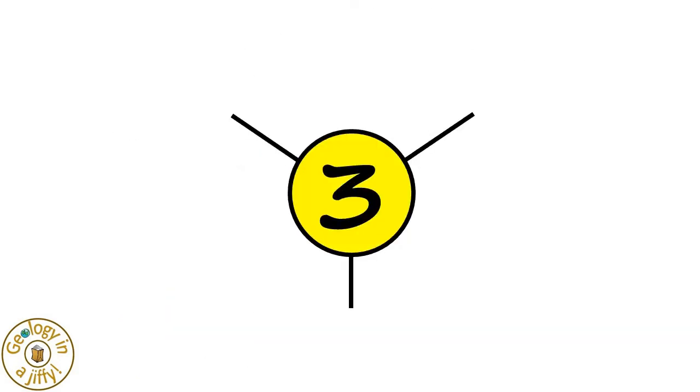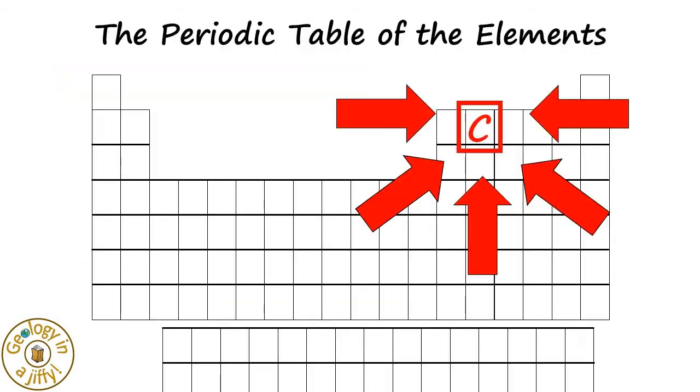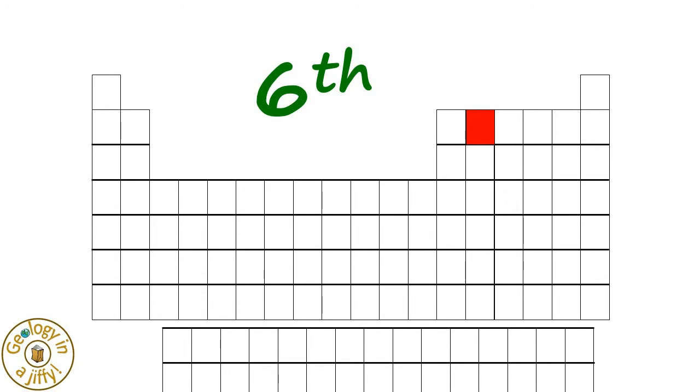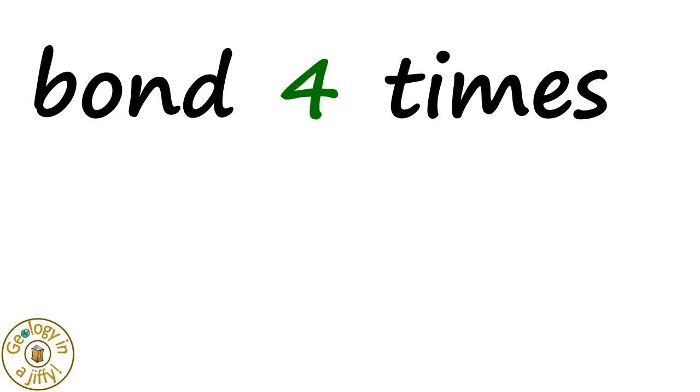Carbon has three main allotropes of diamond, graphite and fullerenes. Carbon is the sixth element in the periodic table, the fourth in the second period of eight, so meaning it has four gaps in its outer shell, meaning it needs to bond four times to be stable.